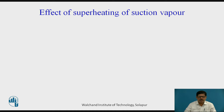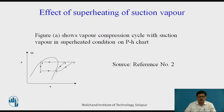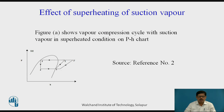Let us discuss first the effect of superheating of suction vapor. In the vapor compression cycle, as shown in the figure, 1, 2, 3, 4 is the simple saturated cycle. Simple saturated cycle means the vapor entering the compressor is dry and saturated, and at the end of compression it becomes superheated.